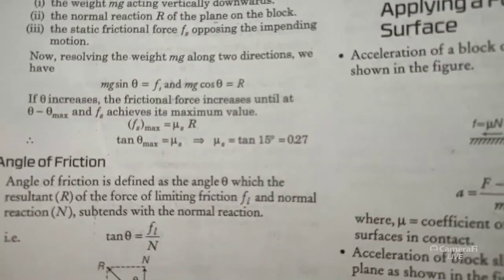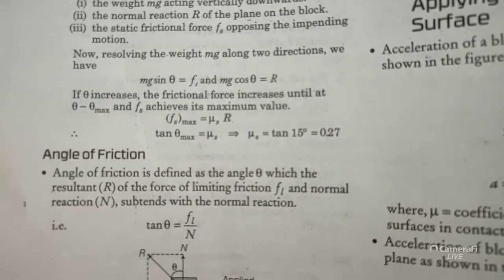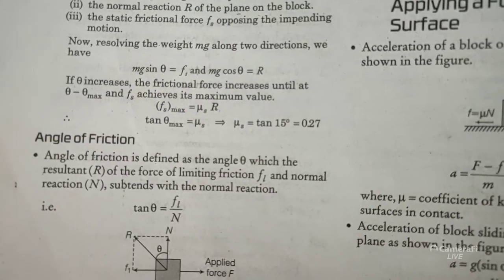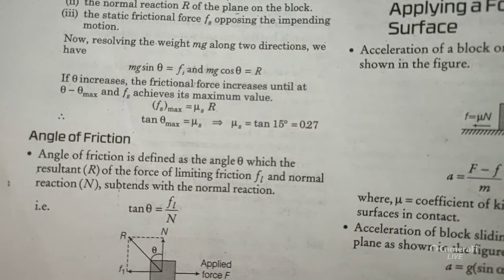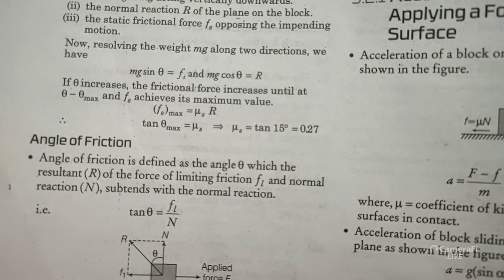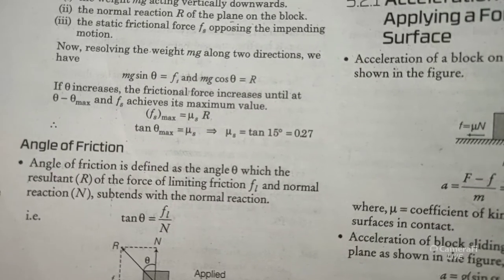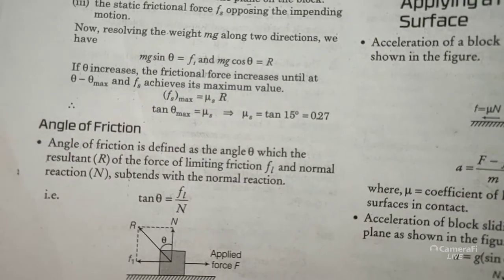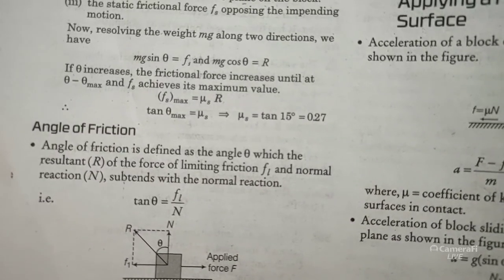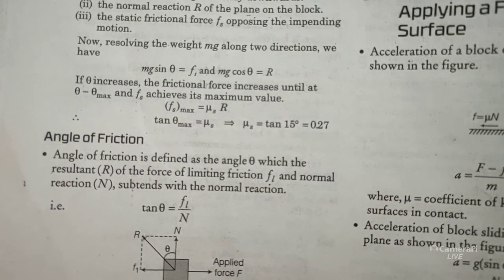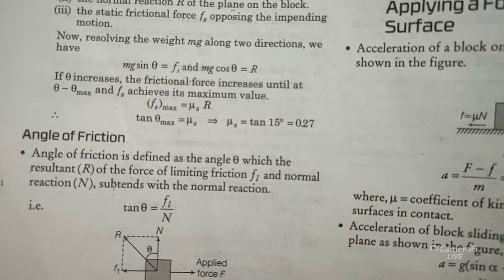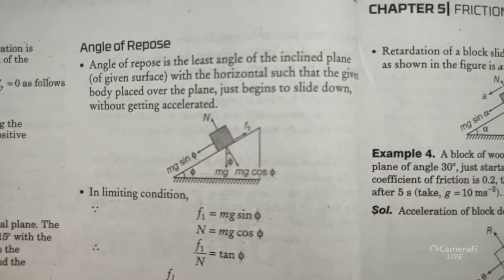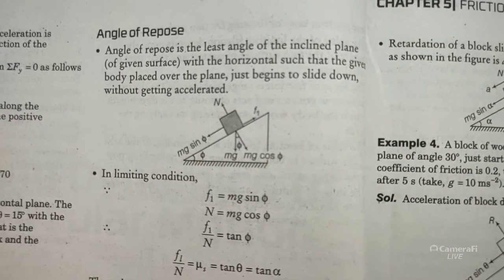Angle of friction: it is the angle θ between the resultant R of the normal reaction N and the limiting friction force F, measured with the normal reaction N. So if you have N upward and F along the surface, their resultant R makes angle θ with N — that angle is called the angle of friction.